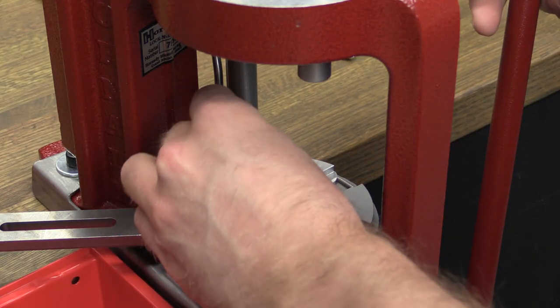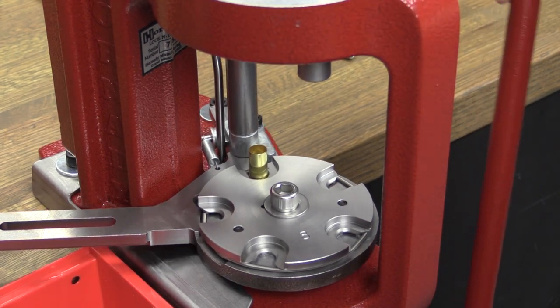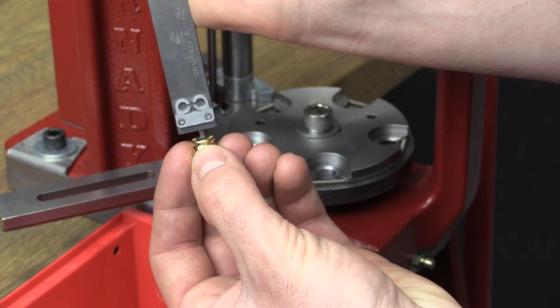Place the cartridge case back into station 2 and push the press handle away from you past the stop to seat the primer. Stop and check to make sure that the primer is being seated to the correct depth.